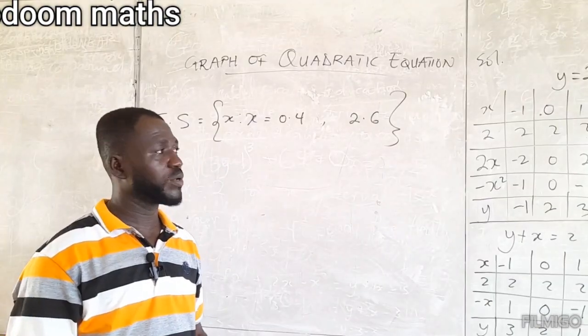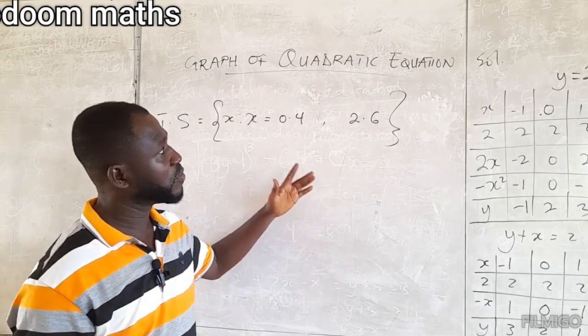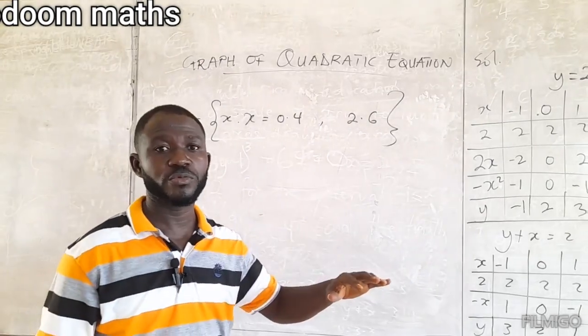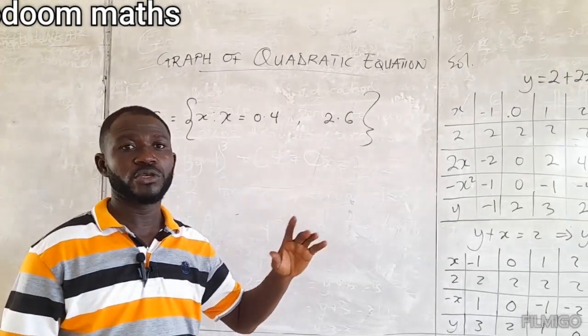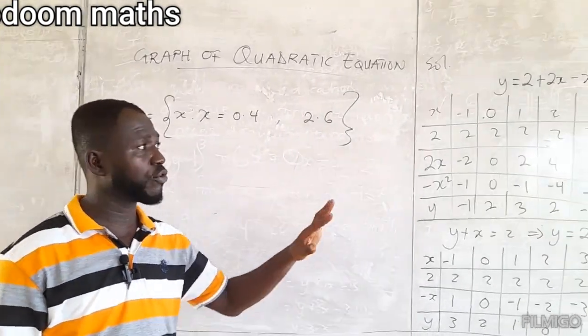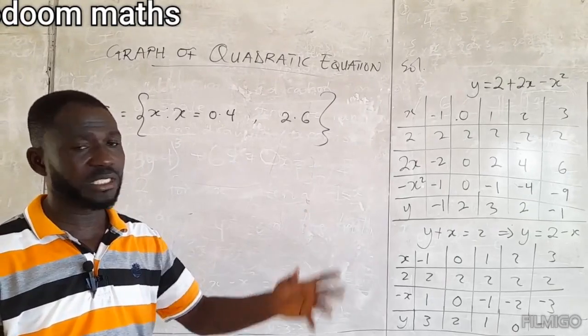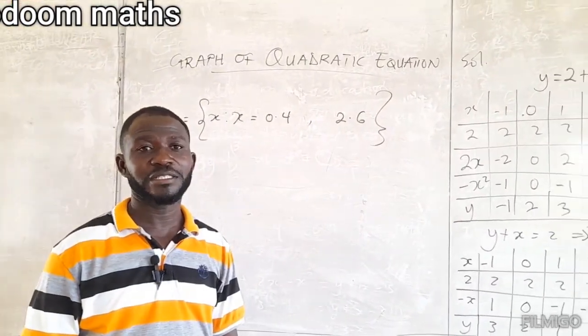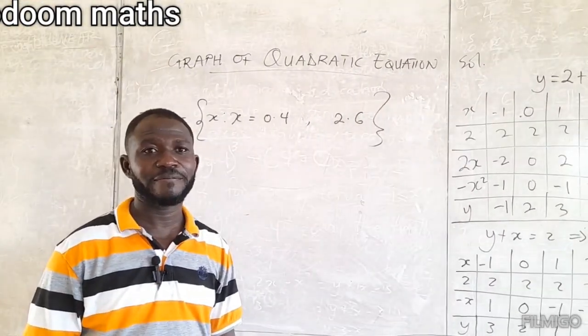So the truth set is x such that x equals 0.4 and x equals 2.67 approximately. I hope with this, when a question of this nature is given, you will be able to solve it and draw the graphs. Thanks for watching. Bye.